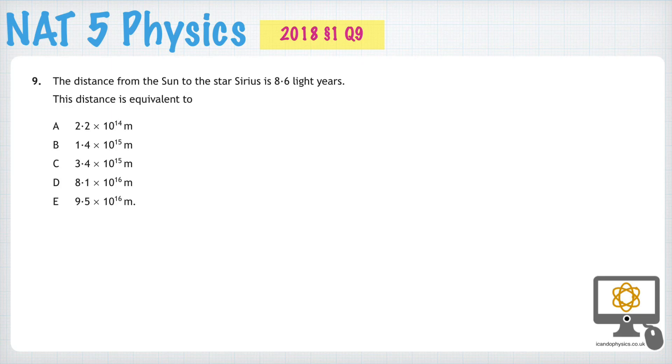Question 9 from the 2018 National 5 Physics paper assesses our understanding of converting between light years and metres. Here we have information about the star Sirius, which is 8.6 light years away from the Sun.